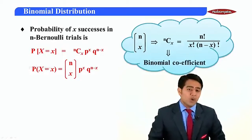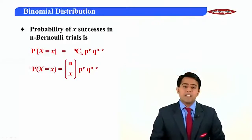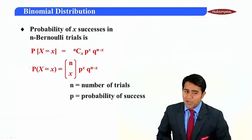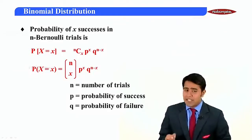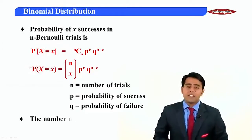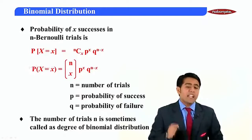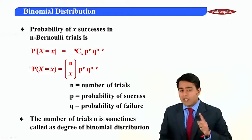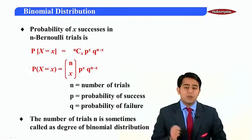The term nCx is called the binomial coefficient. To recap: n is the number of trials, p is the probability of success, q is the probability of failure, and p plus q equals 1. The number of trials n is sometimes also called the degree of the binomial distribution.